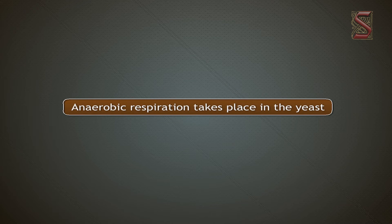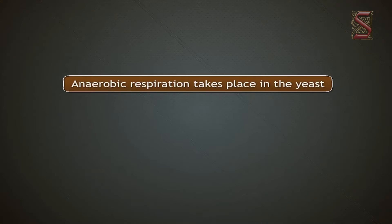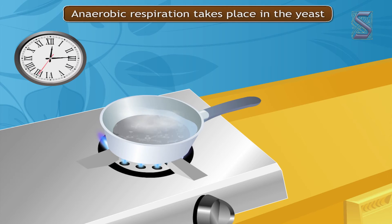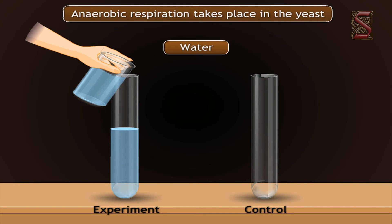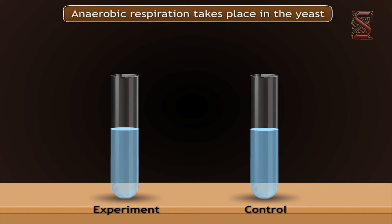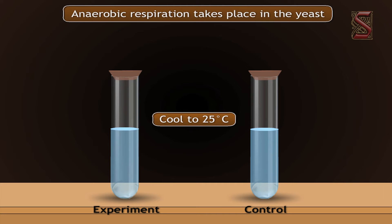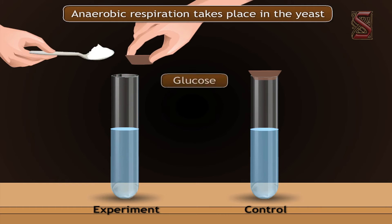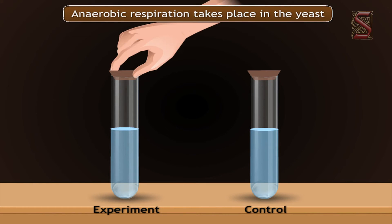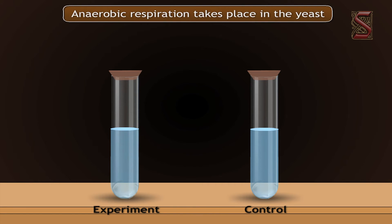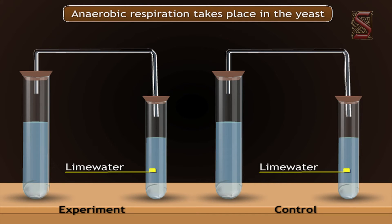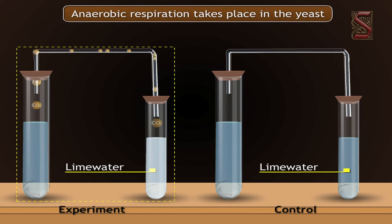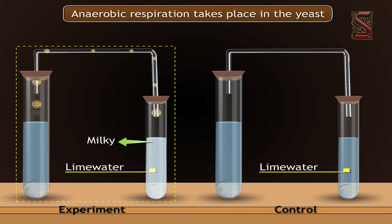Let us now do an interesting experiment to prove that anaerobic respiration takes place in yeast. Boil water for 15 minutes to remove all dissolved oxygen. Almost fill two flasks with the water and allow them to cool to 25°C in sealed flasks to prevent reoxygenation. Dissolve glucose in each flask. Add live yeast to one (the experiment) and no yeast to the other (the control). Insert a thin glass tube from each stoppered flask into a test tube of lime water. In the control setup, there is no change in the flask or lime water, while in the experimental setup, the gas emitted turns the lime water milky — the gas is therefore carbon dioxide (CO2).